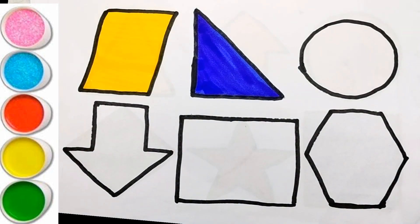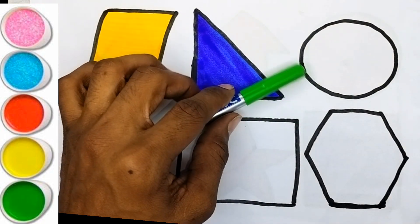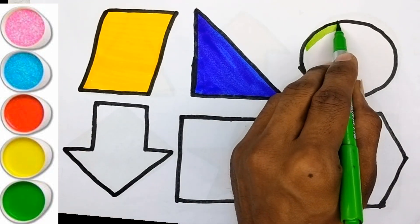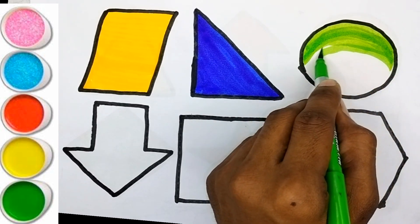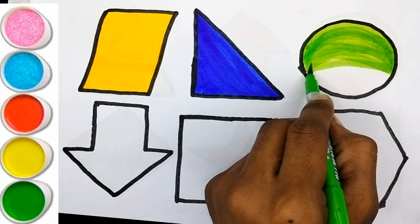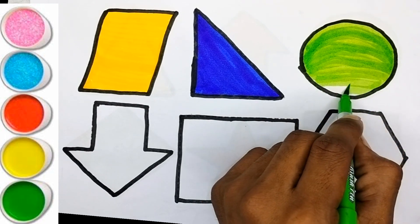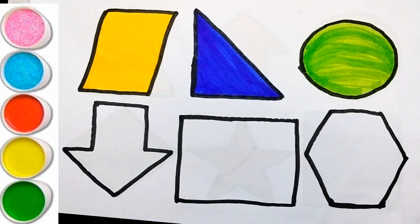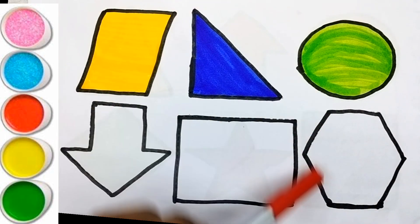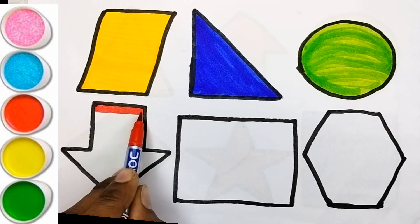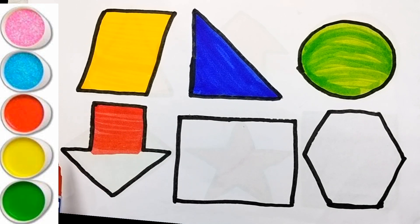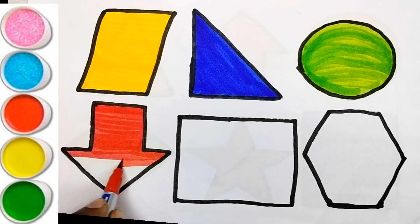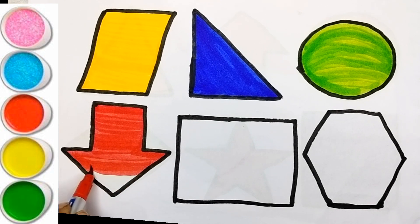Right triangle, green color, circle, red color, down arrow.